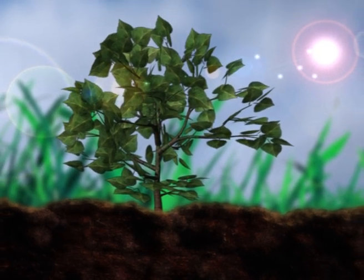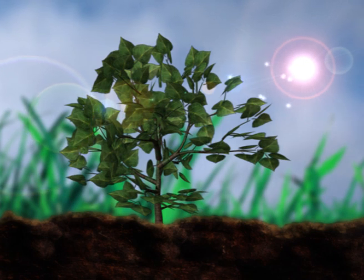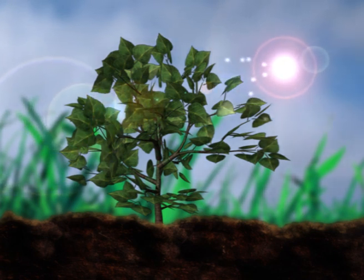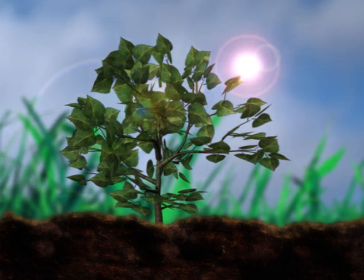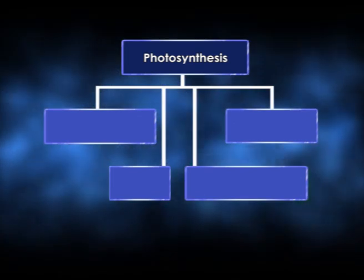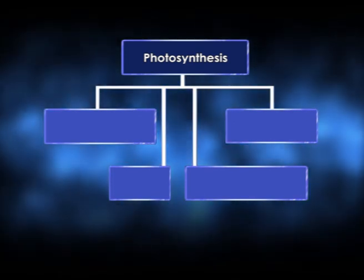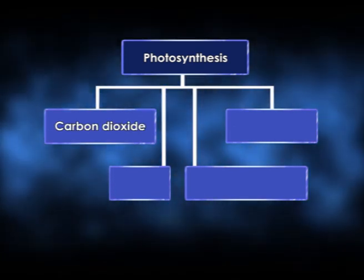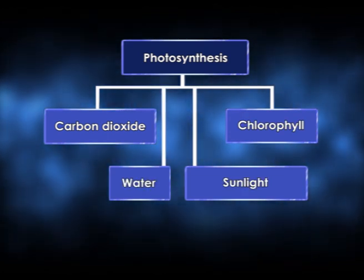Green plants are producers and carry out the process of photosynthesis, in which green plants absorb solar energy to make food from carbon dioxide and water. The factors needed for photosynthesis are carbon dioxide, chlorophyll, water, and sunlight.